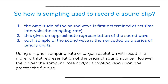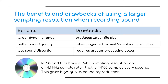So how is sampling used to record a sound clip? The amplitude of the sound wave is first determined at set time intervals — the sampling rate. This gives an approximate representation of the sound wave, and each sample is then encoded as a series of binary digits. Using a higher sampling rate or larger resolution will result in a more faithful representation of the original sound source. However, the higher the sampling rate and/or sampling resolution, the greater the file size. These large files will take longer to transmit or download over the internet and potentially require greater processing power.